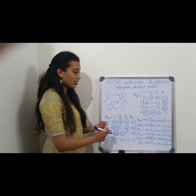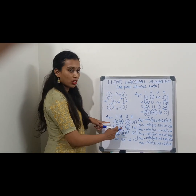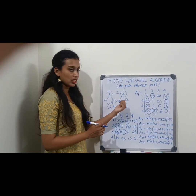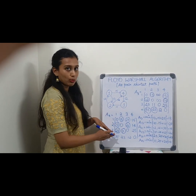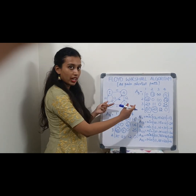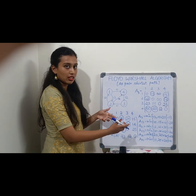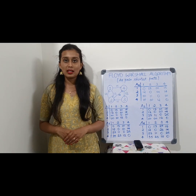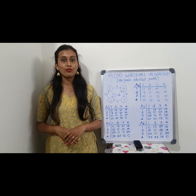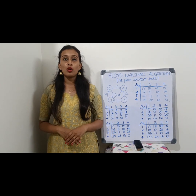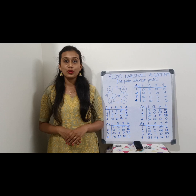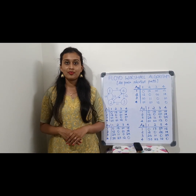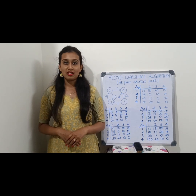This A4 matrix is our final matrix. This matrix gives the shortest path between all pairs of vertices. Since our graph has 4 vertices, we construct 4 matrices. If the number of vertices is 5 then we construct A5. Floyd-Warshall algorithm is a valuable tool for a variety of applications like network routing and traffic optimization. I hope you found this video helpful, thank you for watching.